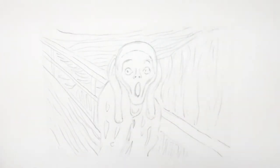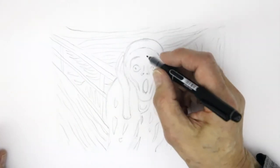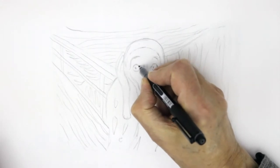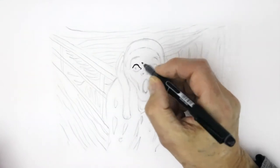And I'll now get a pen. Let's start with the features. Let's start with the eyes here. A little shape like that. Coming up.